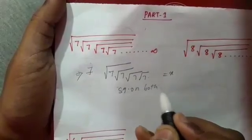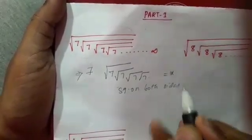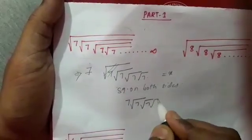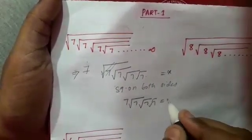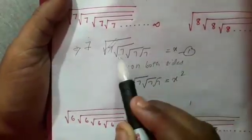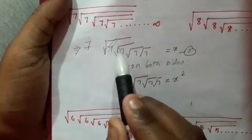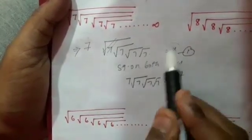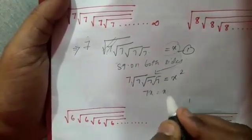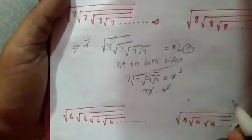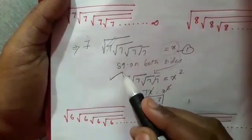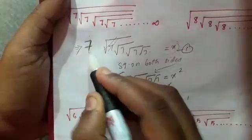Squaring on both sides, we write the square root: 7 times root 7, root 7, root 7 equals x squared. We already know root 7, root 7, root 7, root 7 — we substitute x. So 7x equals x squared, meaning x is equal to 7.